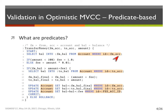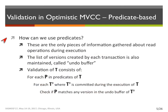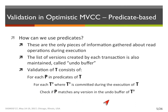Now that we know what predicates are, the next question is how can we use them? During the execution of the program, instead of gathering the read objects, we gather the predicates — these small condition objects. In addition, we also need to gather the versions written by each transaction, normally called the write set, but here we refer to it as the undo buffer. Then, at validation time, when we want to validate a transaction T, we go over all of its predicates and check whether there is any match between these predicates and a version in the undo buffer of another transaction that committed during the execution time of T.